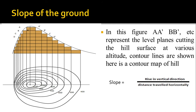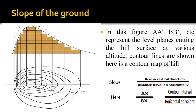You can also calculate the slope of the ground using the formula: slope equals rise in vertical direction divided by distance traveled horizontally. Say this is point A and this is point B — the rise in vertical direction is A to X, and the distance traveled horizontally is B to X, so slope equals AX divided by BX. This rise in vertical direction can be written as the contour interval.